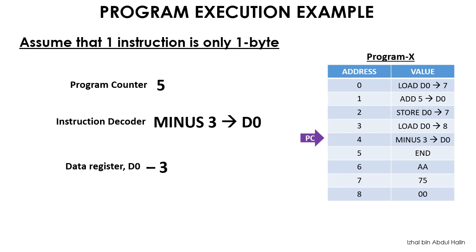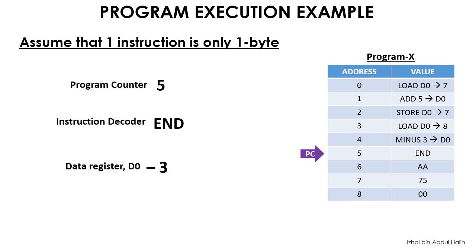The last fetch-execute cycle now starts with the program counter's value equal to 5. This value is put onto the address bus and now the program counter is pointing to address 5. The instruction to end the program is sent to the instruction decoder through the data bus, and the program counter's value is incremented to 6. The decoded instruction causes the CPU to end the program. This concludes the final fetch-execute cycle.